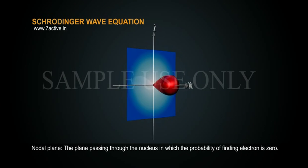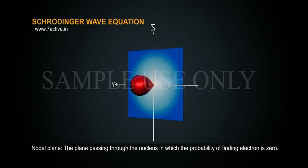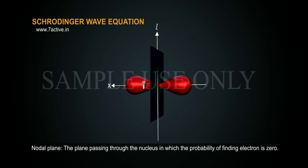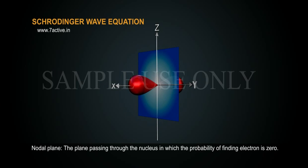Nodal plane: The plane passing through the nucleus in which the probability of finding electron is zero.